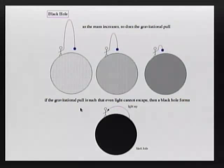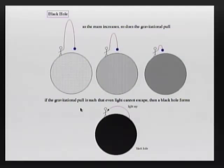If you're here on Earth and you throw a ball up, the ball will go up and it will come down. If you throw it fast enough, it will keep going up and escape from the Earth. There is a velocity — if you throw something with a velocity greater than that, the object will escape. That's called escape velocity.